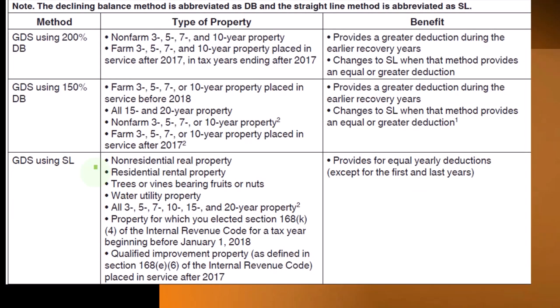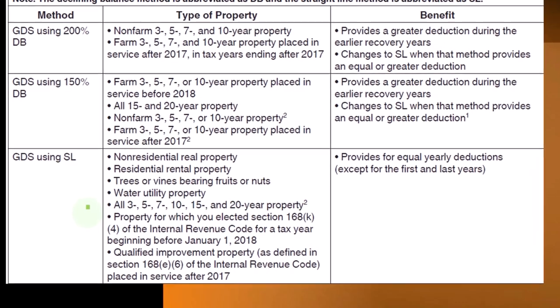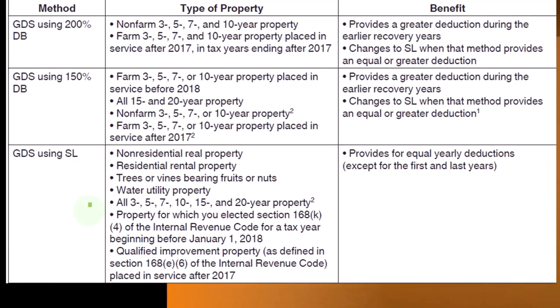Trees or vines bearing fruits, water utility, all 357, 10, 15, and 20-year property. There's an appendix for property for which you elected section 168, and it provides an equal yearly deduction.